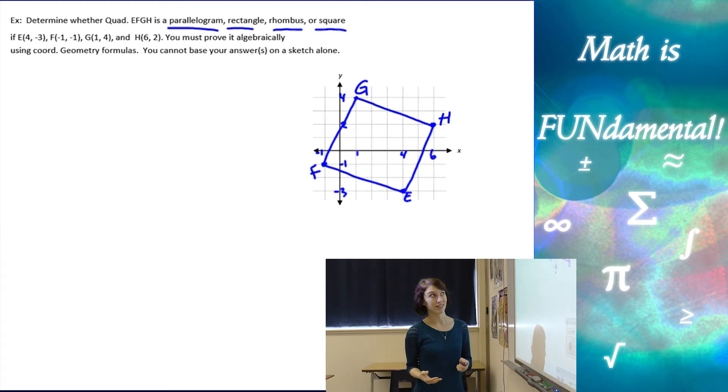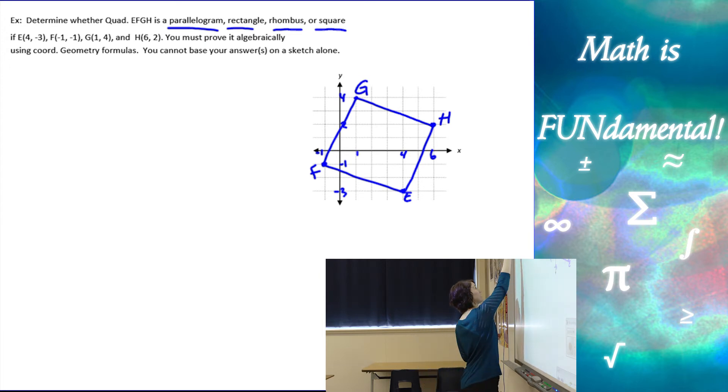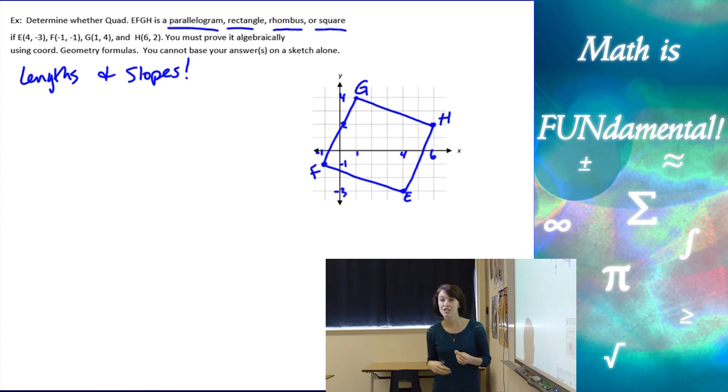Alright, and now we have to come up with a plan. So think about all the things we learned in the last couple videos about parallelograms and rectangles, rhombuses, squares. What we want to really figure out is the lengths of the sides and the slopes of the sides to figure out if they're parallel or not. So let's see, we want to find lengths and slopes of all the sides, just to make sure we've got all of our pieces.